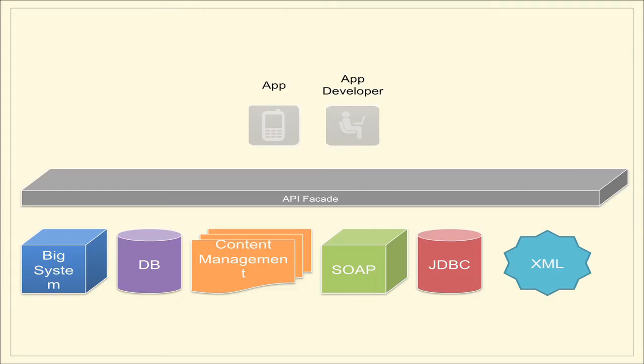To recap: the API facade is a simple architectural idea where between your app developers and your apps, you put a beautiful API design powered by an API facade, which in turn masks all the complexity of whatever internal systems are actually powering that capability. So let's dig into the technology.